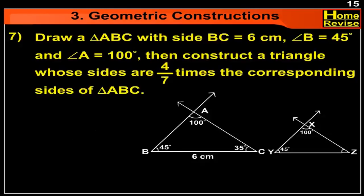Draw a triangle ABC with side BC is equal to 6 cm, angle B is equal to 45 degrees, and angle A is equal to 100 degrees. Then construct a triangle whose sides are 4 upon 7 times the corresponding sides of triangle ABC.